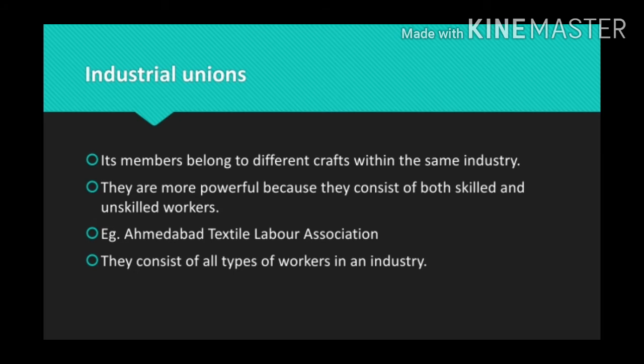An industrial union is organized on an industry-wise rather than craft-wise basis. Its members belong to different crafts within the same industry. Industrial unions are more powerful because they consist of both skilled and unskilled workers. Such a union cuts across skill and craft distinctions of workers. It is easier for the employer to bargain with one union covering all workers of a particular industry, saving the trouble of bargaining with multiple craft-based unions. However, skilled workers may feel sidelined by unskilled workers and their specific demands may not be met.